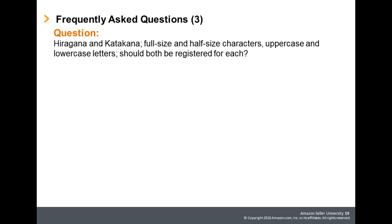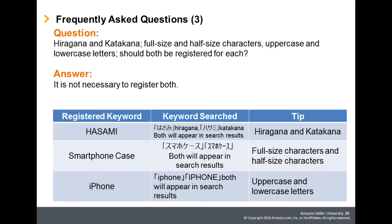The third frequently asked question: Hiragana and katakana, full-size and half-size characters, uppercase and lowercase letters — should both be registered for each? It is not necessary to register both. Register either Hiragana or katakana; the same applies to full-size and half-size characters, and uppercase and lowercase letters. For example, if 'hasami' is registered in Hiragana, both Hiragana and katakana versions will appear in search results. Similarly, if 'smartphone case' is registered in full-size characters, both full-size and half-size versions display. If 'iPhone' is registered using the alphabet, both uppercase and lowercase versions will be displayed.